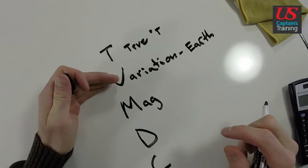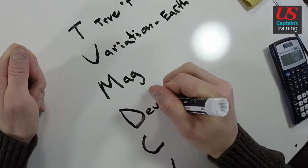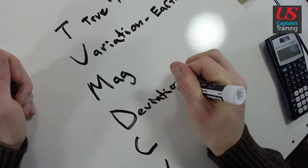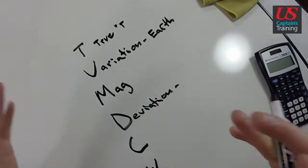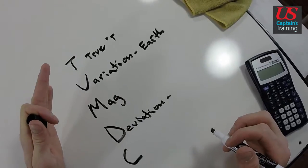We have true degrees. Variation. Where you are on the earth gives you magnetic. This D. Deviation. Deviation is kind of conceptual, but don't get confused. It's dependent on one thing. Just remember this. Deviation is dependent on your heading.